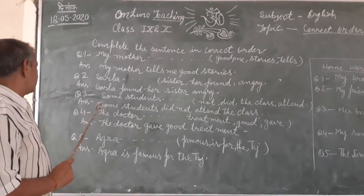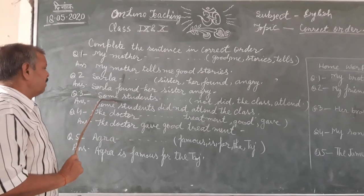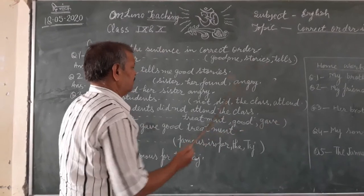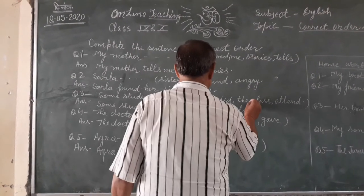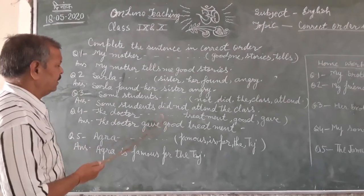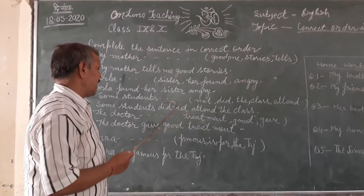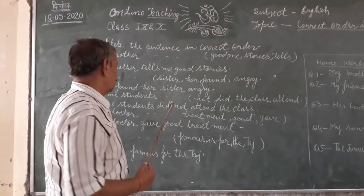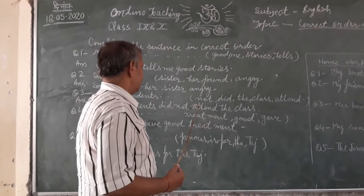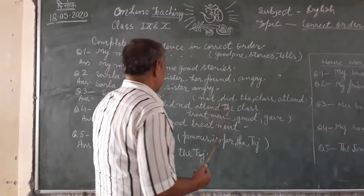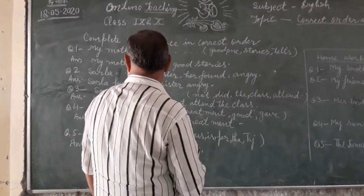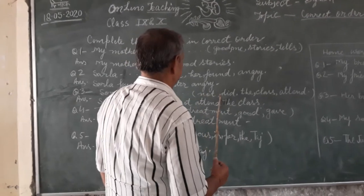The third sentence is: some students, in bracket: not, did, the class, attend. You have to write the words in correct order. Since 'did not' forms the negative auxiliary, we have to keep 'did not' after 'some students', and 'attend' will be kept after 'did not'. So the answer is: some students did not attend the class.